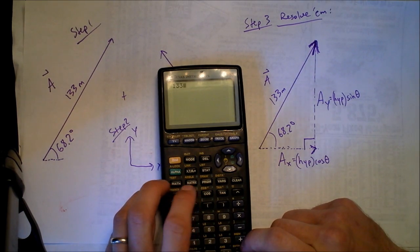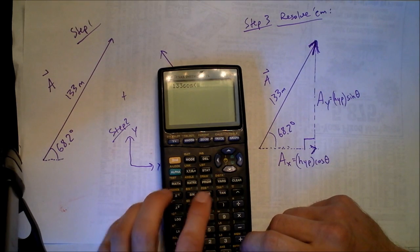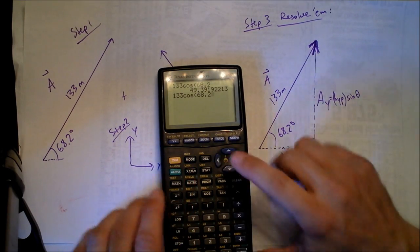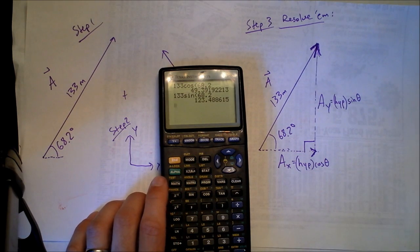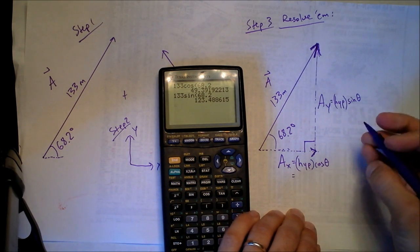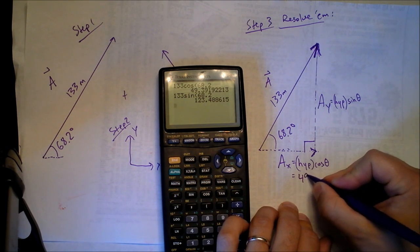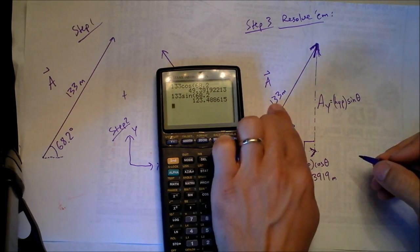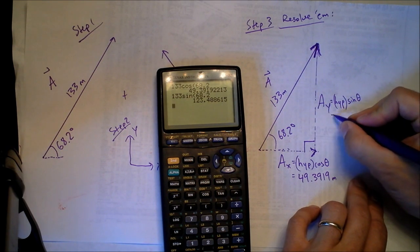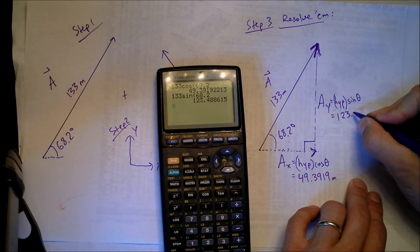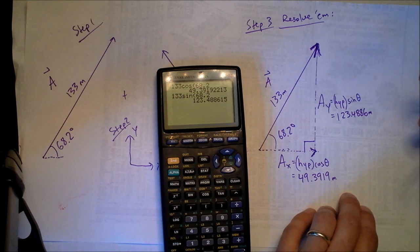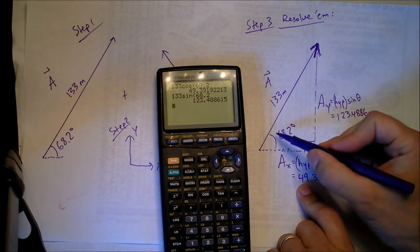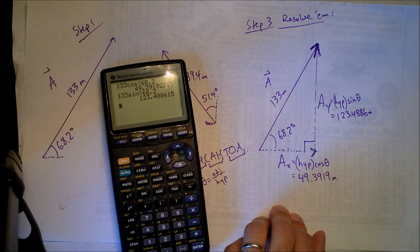We calculate: 133 times cosine of 68.2 degrees, and then 133 times sine of 68.2 degrees. A_x equals 49.3919 meters and A_y equals 123.4886 meters. Notice that A_y is significantly longer than A_x — that's consistent with the angle being greater than 45 degrees, which is something you should always check.